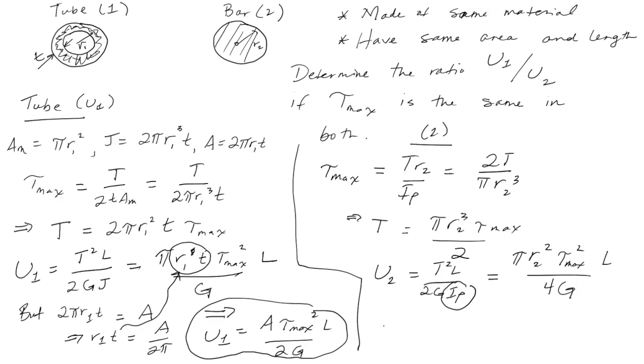That's pi r2 squared tau max squared L over 4G. Again, we play the same trick where pi r2 squared equals A, so this becomes A. Now we have an expression that looks exactly like the one on the left. If you compare this to this, notice there's a factor of 2 difference. So U1 divided by U2 equals 2. There's twice as much strain energy in the circular tube for the same amount of shear stress.